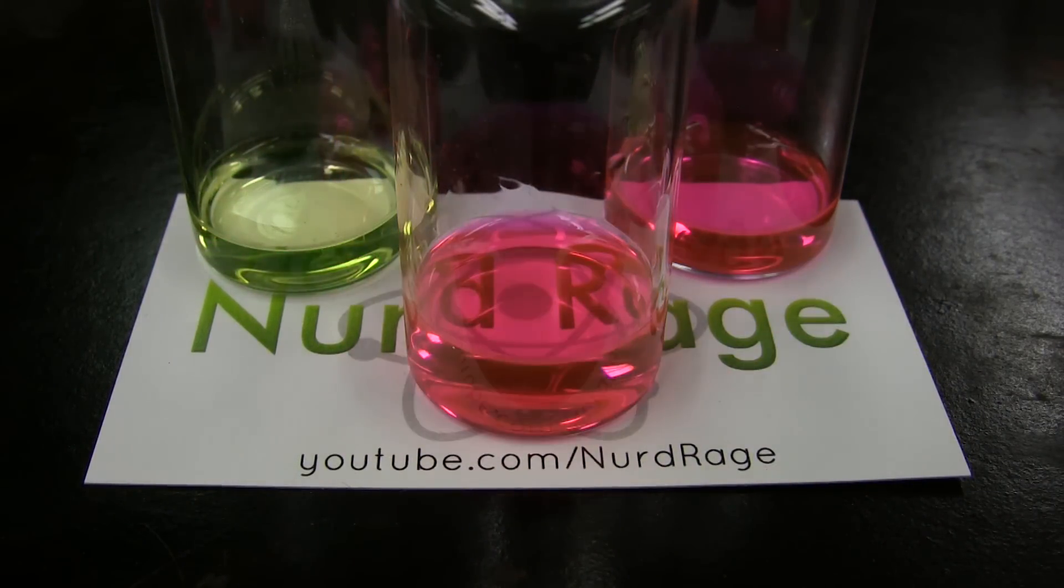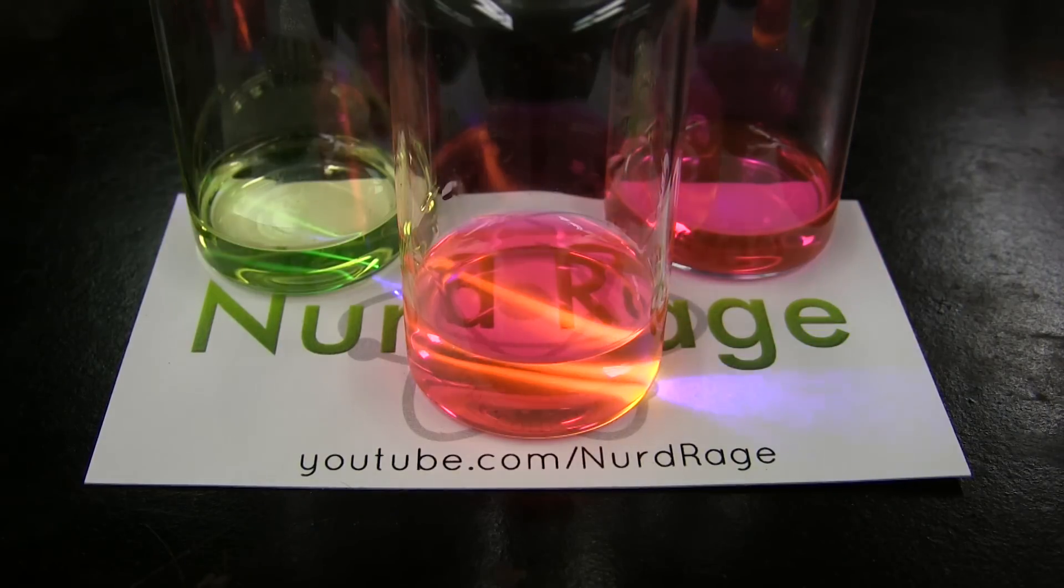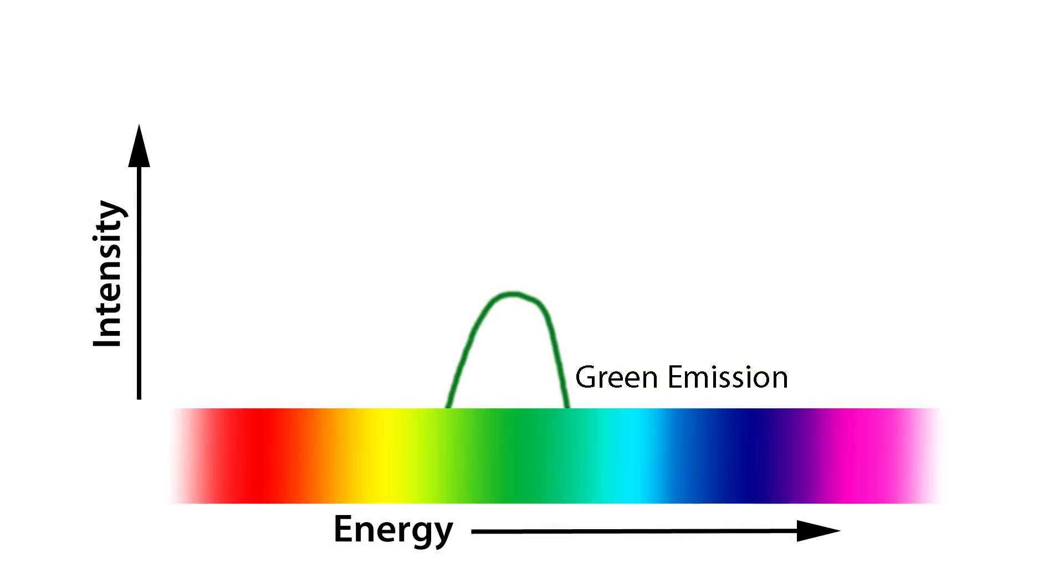I know green and yellow are very close but we should have at least seen a change in hue or something. These two yellows are exactly the same. There's actually a reason for this. The green dye is emitting light as expected but the yellow dye immediately absorbs that green light and converts it to yellow.